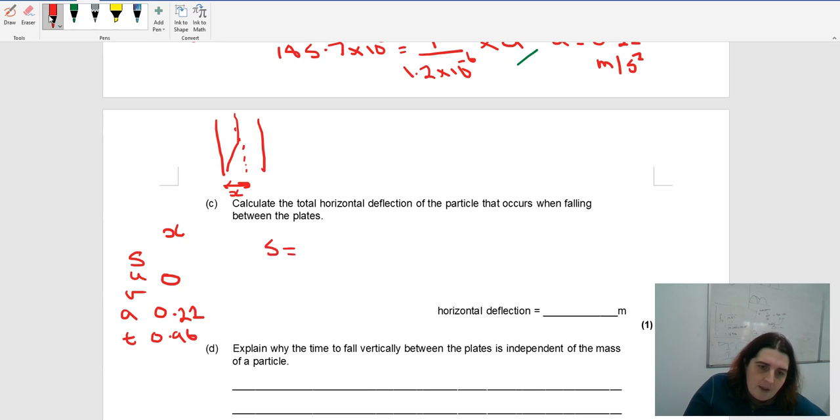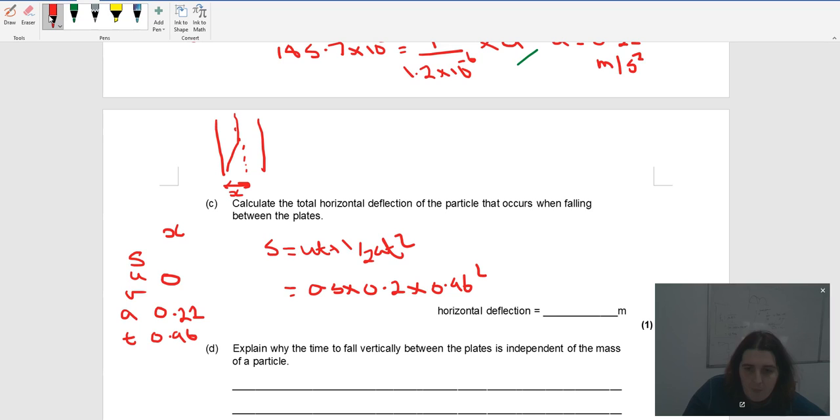I'm going to use S equals UT plus a half a T squared. That's 0.5 times 0.2 times 0.96 squared. I get an answer of 0.09 meters.